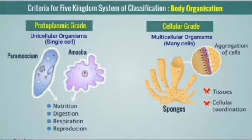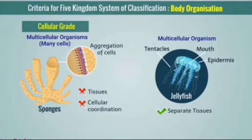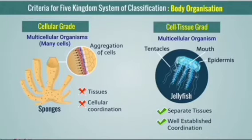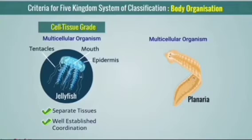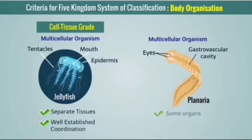The next level is called tissue level of organization. Some organisms like jellyfish have tissues. Many cells arrange together to form tissues. These tissues in jellyfish have well-developed coordination functions. So it is called tissue level or tissue grade organization.